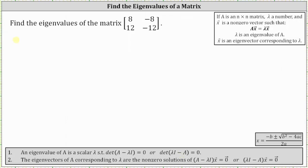So we need to solve the equation: the determinant of the given matrix A minus λ times the two by two identity matrix equals zero.